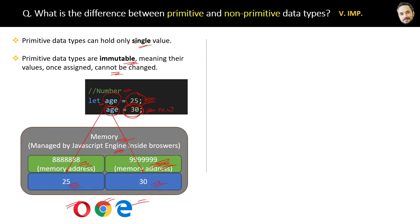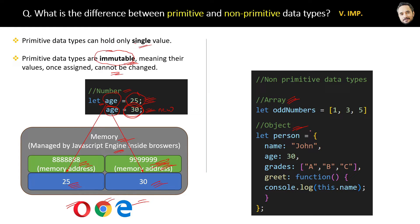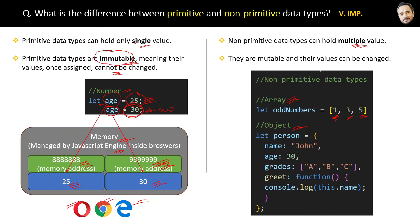That's why numbers, strings, and all primitive data types are immutable — their values are never changed. 'Immutable' means a thing that cannot be changed or modified. Now let's look at non-primitive data types. Here is an array and here is an object. Non-primitive data types can hold multiple values, and they are mutable — their values can be changed. If you modify a value inside the same array, it can be done at the same memory location or address.